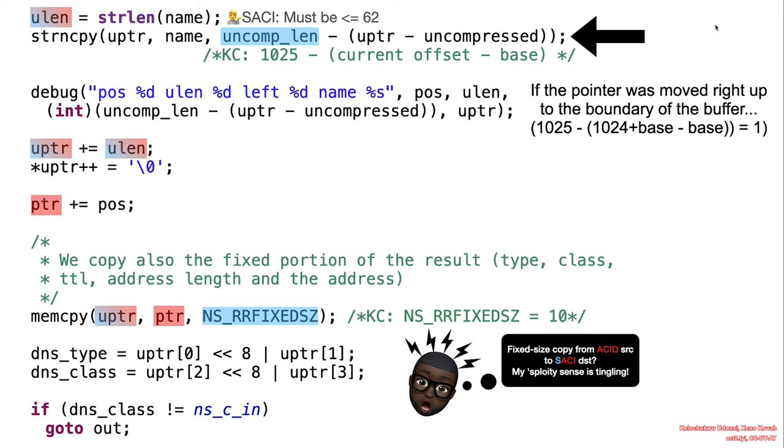So if the pointer was moved right up to the boundary of the buffer, if the current offset is 1024, then if we done the calculation, there would essentially be one byte to copy. If we copy one byte out of name, and name could potentially be 62 bytes long, then upointer is advanced 62 bytes when really only one byte was copied into upointer. Okay, that sounds interesting. But even more so is that first, then when we come down here, it is likely that this memcpy would overflow the buffer.